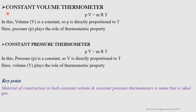In a constant volume thermometer, pressure plays the role of thermometric property, while in a constant pressure thermometer, volume plays the role of thermometric property. An important point is that the material of construction for both is the same — ideal gas — which is why the ideal gas equation is used.